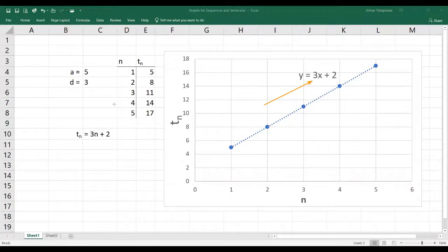You see, the value of d, you'll discover, will give you the gradient of that line. So when you graph the terms of the arithmetic sequence, you'll get a straight line, and the gradient of that line will be your value of d.